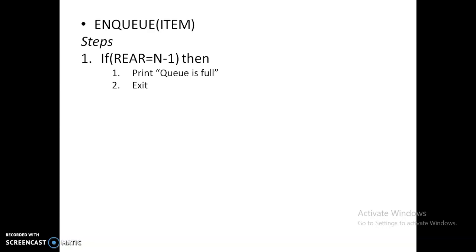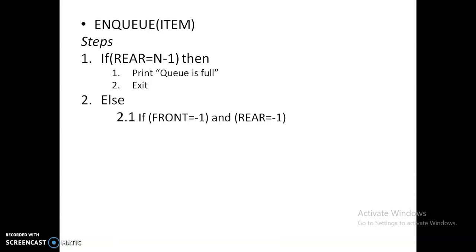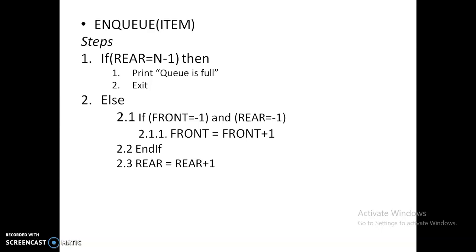The enqueue algorithm: first check if rear equals N minus one — if so, the queue is full. Otherwise, check if front equals minus one and rear equals minus one — the queue is empty, so increment front: front equals front plus one. Then increment rear: rear equals rear plus one. Place the item at queue[rear] — that is, queue[rear] equals item.